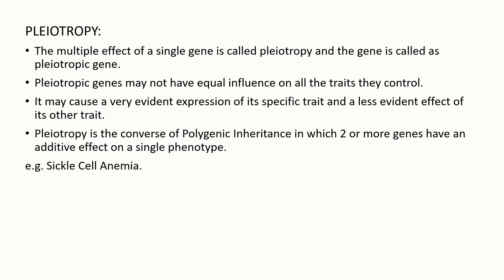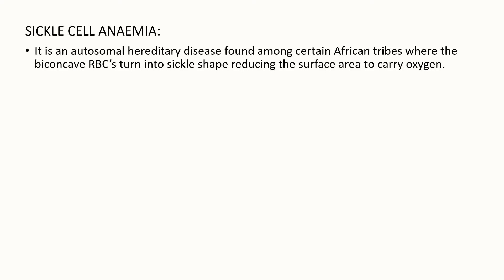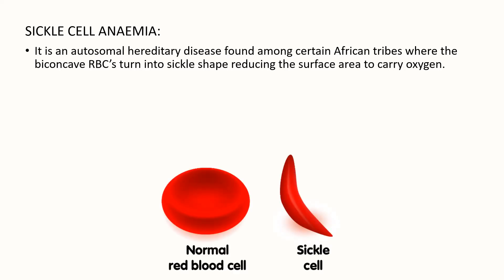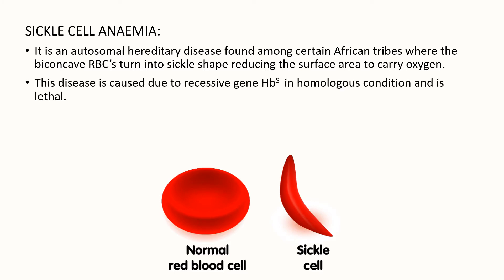For example, sickle cell anemia. To understand pleiotropy, let's first understand what sickle cell anemia is. Sickle cell anemia is an autosomal hereditary disease found among certain African tribes, where the biconcave RBCs turn into a sickle shape, reducing the surface area to carry oxygen. This disease is caused due to the recessive gene HBS in homozygous condition and is lethal, while the normal healthy gene is HBA.